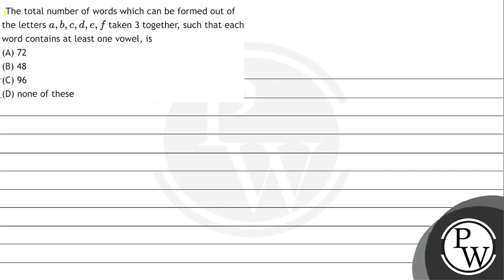The question asks for the total number of words which can be formed out of the letters a, b, c, d, e, f taken three together, such that each word contains at least one vowel.